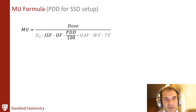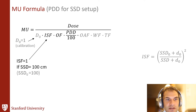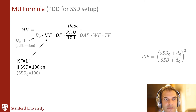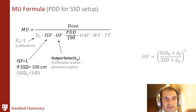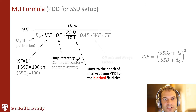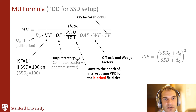The MU formula for photons for PDD or SSD setup is as follows. The MU equals the prescription dose — the dose rate is 1 if you have good physicists. There's an inverse square factor which accounts for conditions where you're treating at a different SSD other than the calibration SSD. If you want to move away from a 10 by 10 field size, you use an output factor other than 1. If you want to move down in depth, you adjust the PDD. You can also adjust for dose off-axis, wedge, block, or tray factor.